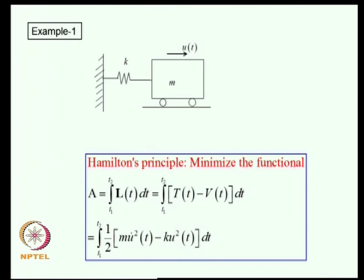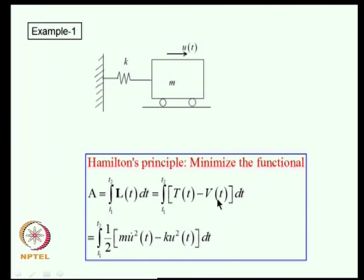For a simple SDOF mass-spring system, the Lagrangian is L = T − V = ½MU̇² − ½KU², and the action integral is ∫(T₁ to T₂) (½MU̇² − ½KU²) dt.